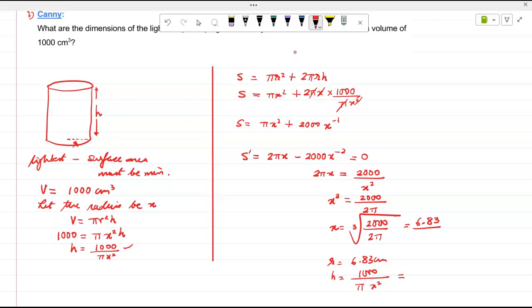You have to take all the significant figures. So 6.83. So those are the dimensions.